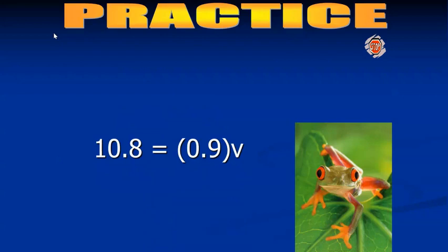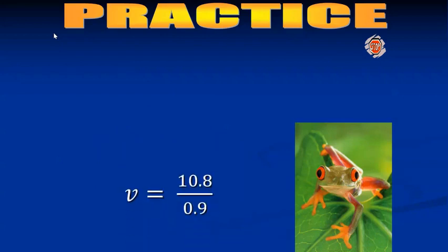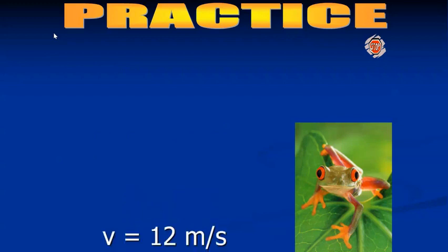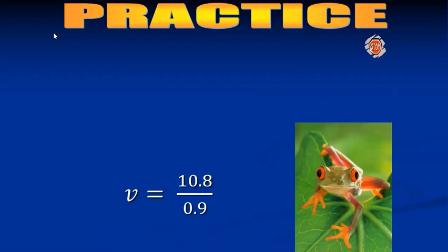So momentum is on the left, mass is on the right. And to isolate V, we're going to have to divide both sides by 0.9. And there you go. So one more time, 10.8 divided by 0.9 gives you 12 meters per second for the frog. So we've used this equation now three different ways.